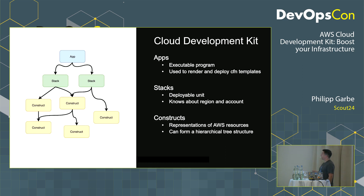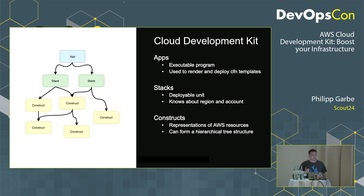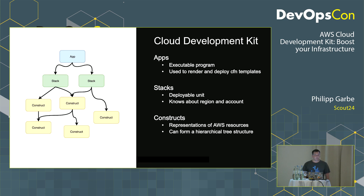How does CDK itself look? There are three different objects in CDK. First is an App — the executable program used to render and deploy your CloudFormation templates. Normally you don't have to deal too much with an App. An App can contain one or more Stacks, which are the deployable units. A Stack in CDK is the same as a stack in your CloudFormation console, and you have environment information like which account and which region to deploy to. Finally, a Stack can contain one or more Constructs, which are the new representation of AWS resources and can form a hierarchical tree structure.